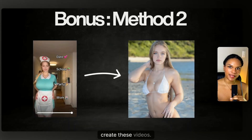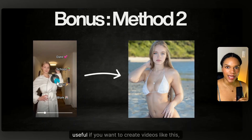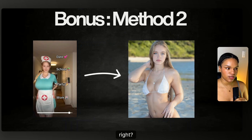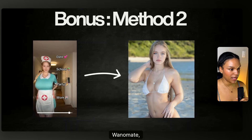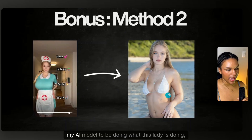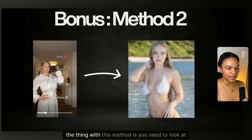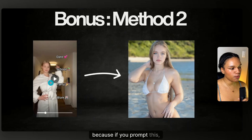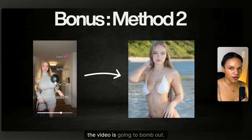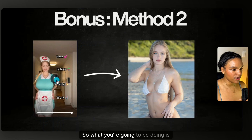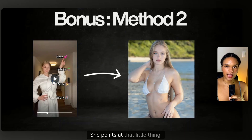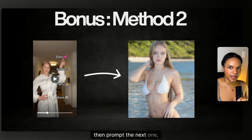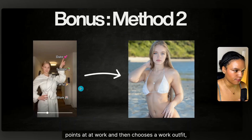I want to show you guys a different method to create these videos. This method is particularly useful if you want to create videos where she changes outfits. To replicate this with Wanamate is going to be very difficult. This is the method I used before Wanamate — I basically want my AI model to be doing what this reference lady is doing, her actions. The thing with this method is you need to look at the actions one by one and then combine all those videos, because if you prompt everything she's doing in one video, the video is going to bomb out. So you're going to prompt that first action — she points at something — and then change her outfit and prompt the next action, and then combine those two.